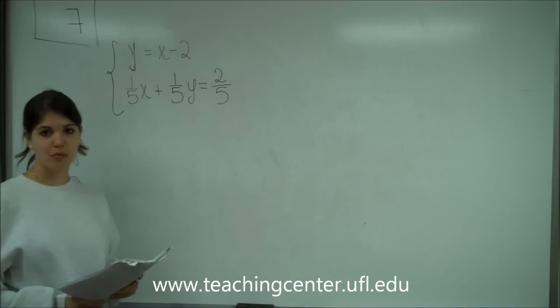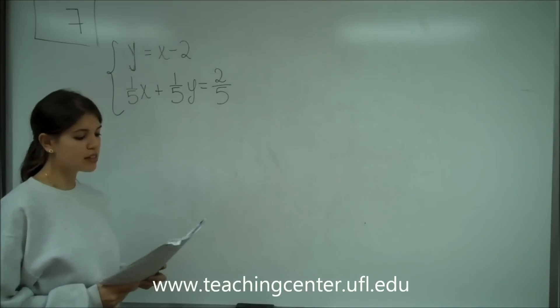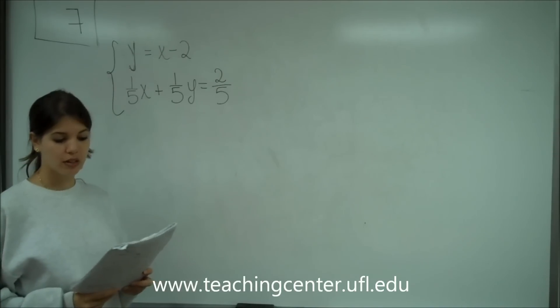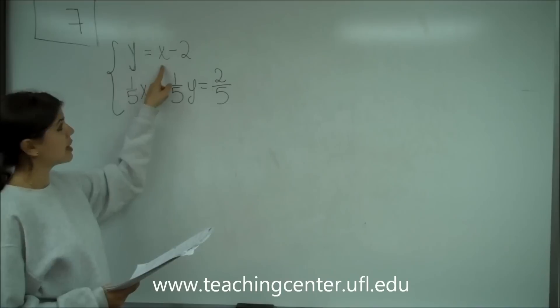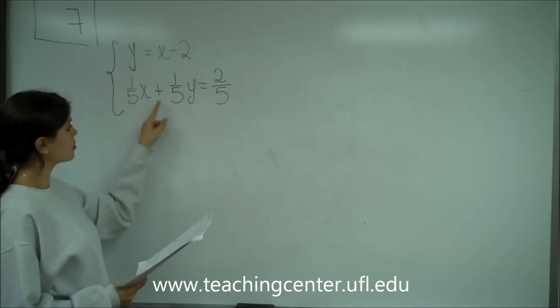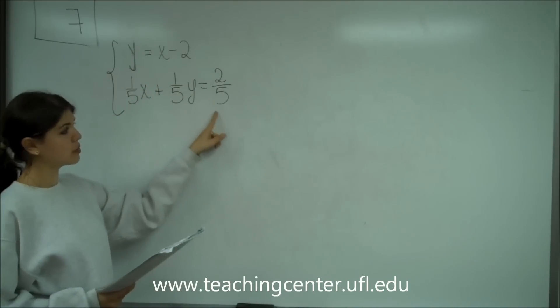This is problem number 7 on the multiple choice, and the question reads: The system of linear equations, y equals x minus 2, and 1 fifth x plus 1 fifth y equals 2 fifths,